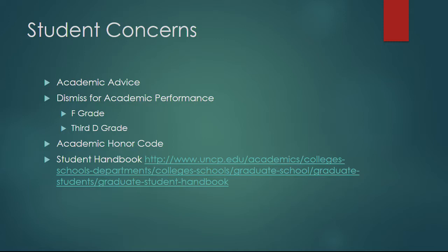Every semester, we must address students who are being dismissed from the program and the grad school for academic reasons. You'll be dismissed from the program and the grad school if you receive an F grade in any class, including foundations. You will also be dismissed from the program if you receive a third C grade. You'll be taking at least 12 classes, and you may earn two C grades, but a third C grade results in dismissal. The only acceptable grades are A and B grades.